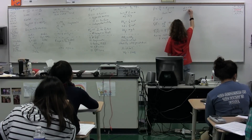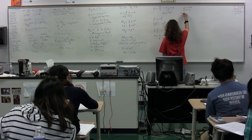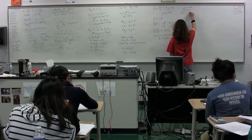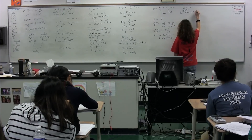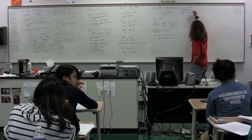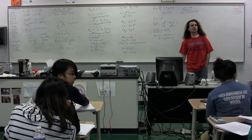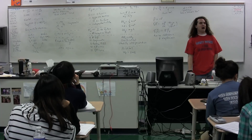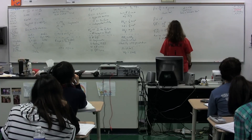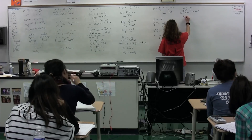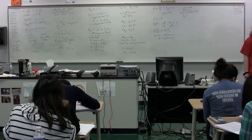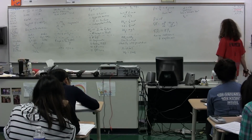Speaking of radians, class, one revolution equals how many radians? 2 pi radians, which equals how many degrees? 360 degrees. Is that on your equation sheet? No. It's in your brain. So we have S equals R theta. We also have V sub T. V sub T, when you're moving in a circle, is called tangential velocity.